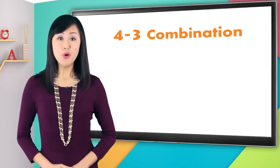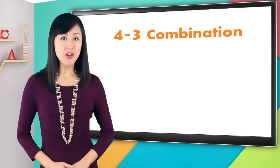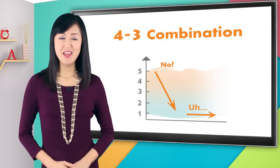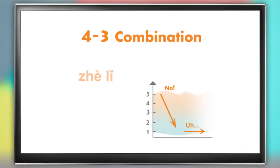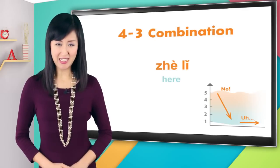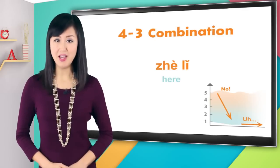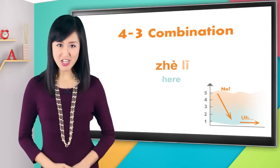Alright, the four-three combination is like 'no, ah.' The sample four-three Chinese word is 这里. No, ah. 这里. 这里 means here. Let's say it together: 这里. No, ah. 这里, 这里.